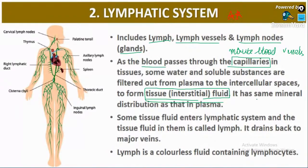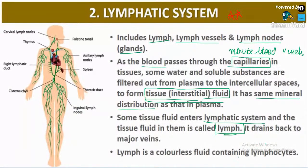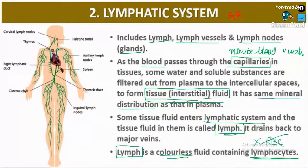Tissue fluid has the same distribution of minerals as blood plasma. Some tissue fluid enters the lymphatic system — the tissue fluid that enters the lymphatic system is called lymph. It drains back to the major veins. The difference between blood and lymph: blood is a red-colored liquid, whereas lymph is a colorless fluid containing only lymphocytes. Lymph does not contain red blood cells.